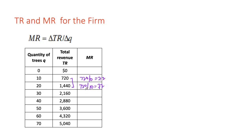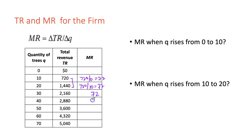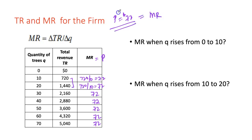We can repeat this for any level of production, and what we note is that the marginal revenue for each additional unit produced is exactly the same as the price the firm faces — $72 in this example. So marginal revenue for a firm under a perfectly competitive market structure is always equal to price. This price is not controlled by the firm but is controlled by overall market dynamics — demand-supply equilibrium gives us the market price.